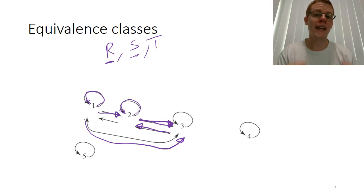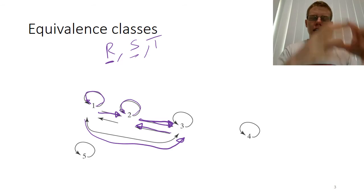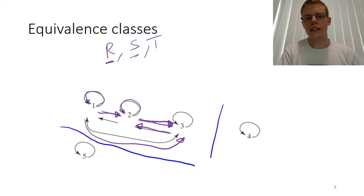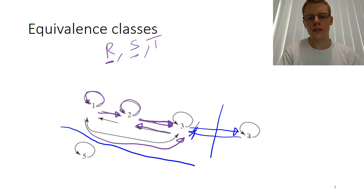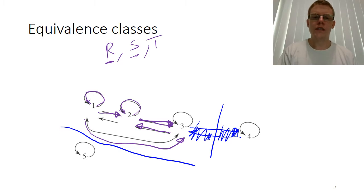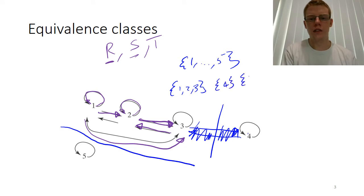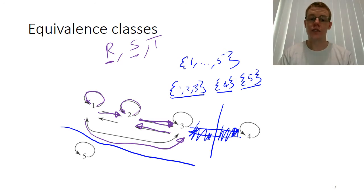When we talk about equivalence relations, that is a relation that says these sets of things are the same within a larger set. You'll have clusters of elements that are all linked together, separated from other clusters. These clusters are called equivalence classes. So with a set of elements 1 through 5, the elements 1, 2, 3 might be collected together, while 4 sits on its own and 5 sits on its own — giving three equivalence classes.